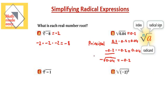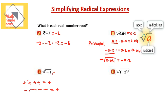Now, if I need the fourth root of negative one, there is no real number I can multiply by itself four times and get negative one. Whether you multiply a positive number by itself four times or a negative number by itself four times, you always get a positive result. So there is no real solution. No negative number has a fourth root or any even root. If it's an odd root it works, but if the index is even, there is no real solution.